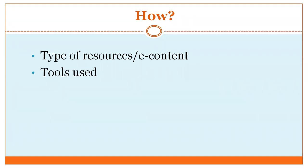The fourth question — 'how' — is about the type of resources or e-content to create. For higher classes we can have more text-heavy content, but for lower stages it is important to engage students differently — through storytelling, animation, puppets, etc. Related to this is the choice of tool to be used for different kinds of resources or e-content.